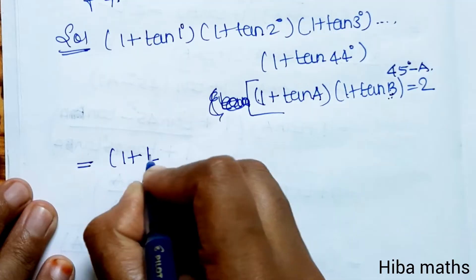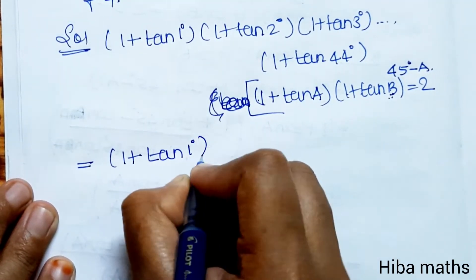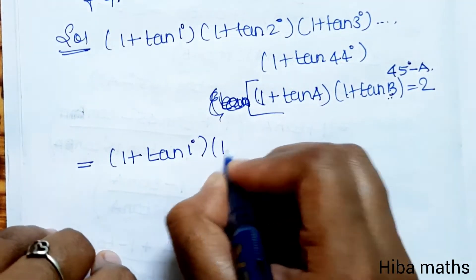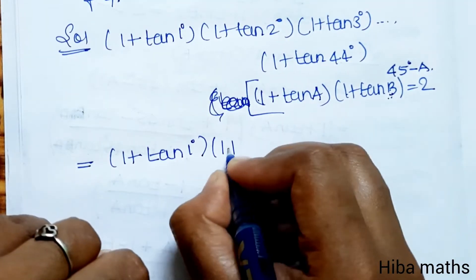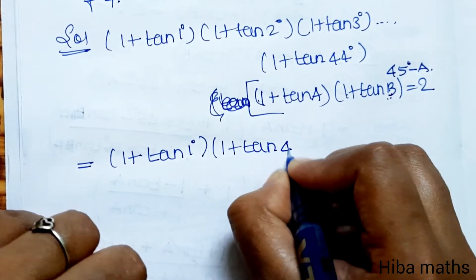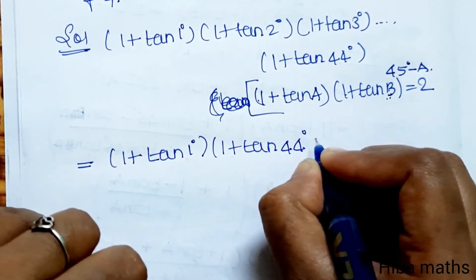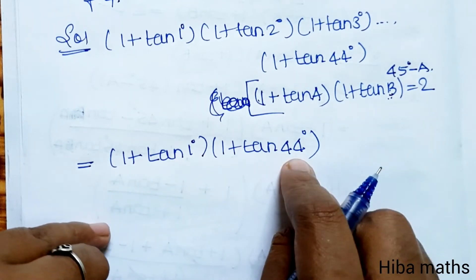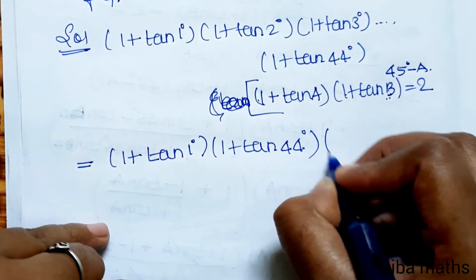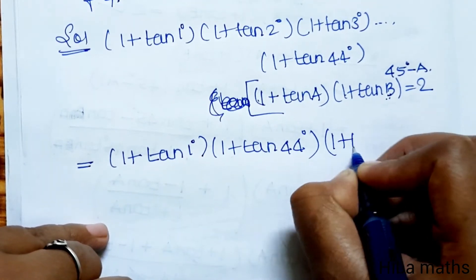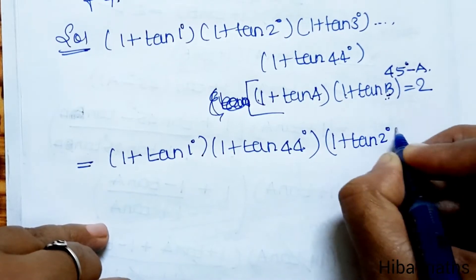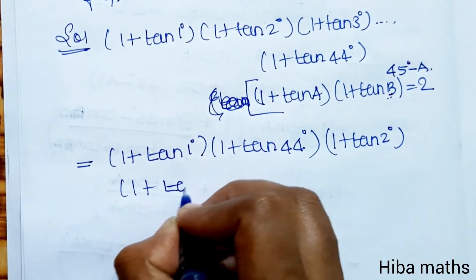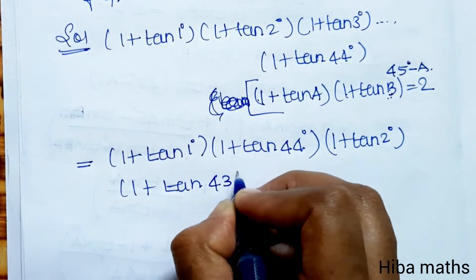So (1 + tan 1°)(1 + tan 44°) = 2, since 1 + 44 = 45. Similarly, (1 + tan 2°)(1 + tan 43°) = 2, since 2 + 43 = 45. Each such pair gives a product of 2.